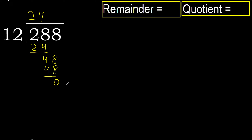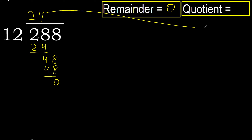There is no next number, therefore finish. 288 divided by 12 is 24.